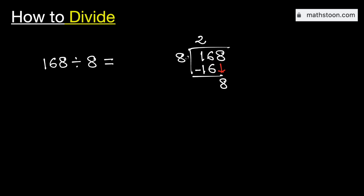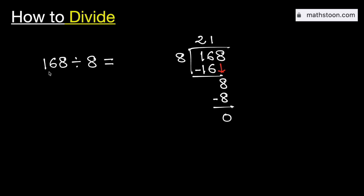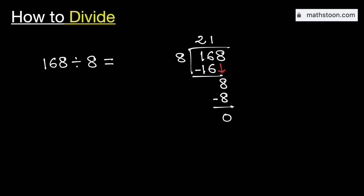And we know that 8 times 1 is equal to 8. Subtract, we get 0. As we have got the remainder 0, we will stop. Therefore, 168 divided by 8 is equal to 21. And this is our final answer.